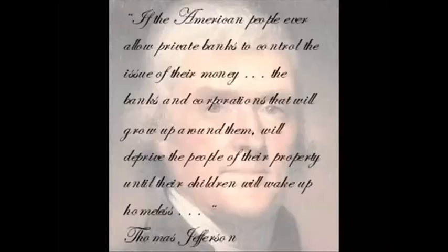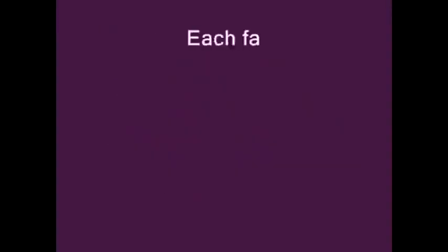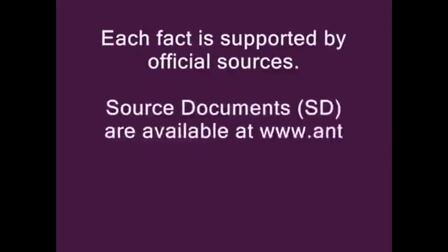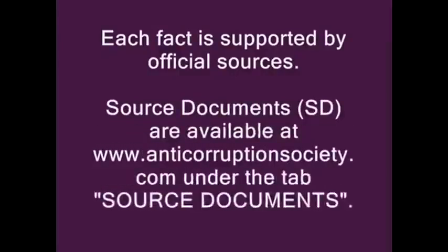If the American people ever allow private banks to control the issue of their money, the banks and corporations that will grow up around them will deprive the people of their property until their children will wake up homeless. — Thomas Jefferson. Following is a timeline demonstrating when and how a private central banking cartel got control of the government, the people, and the assets of the United States. Each fact is supported by official sources. Source documents are available at www.anticorruptionsociety.com under the tab Source Documents.